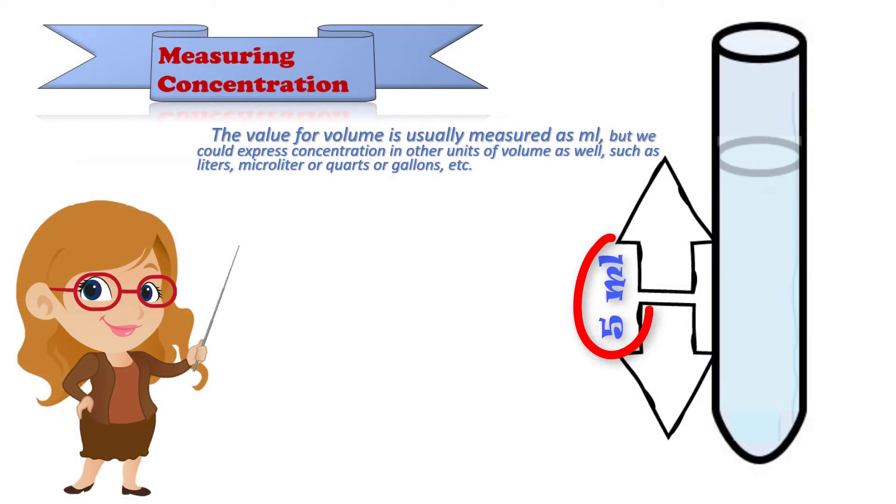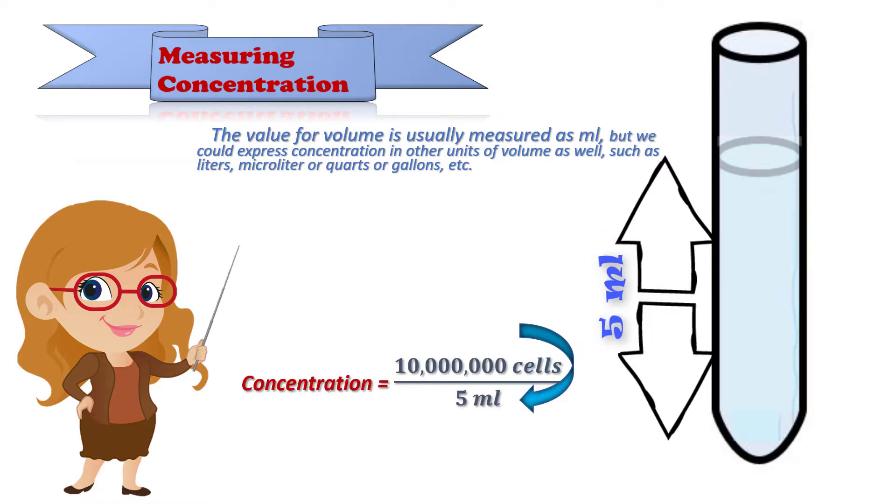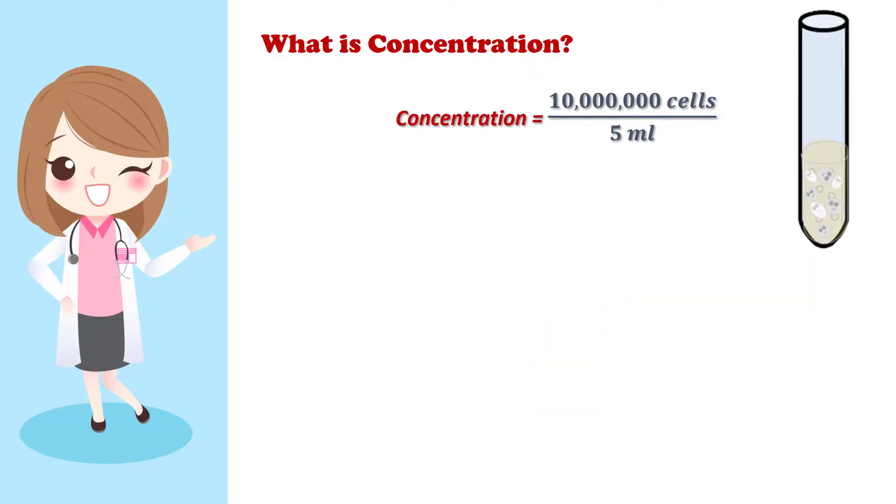And our concentration is expressed as cells per milliliter. So in our example, we would have 10 million cells per 5 mLs. Great!